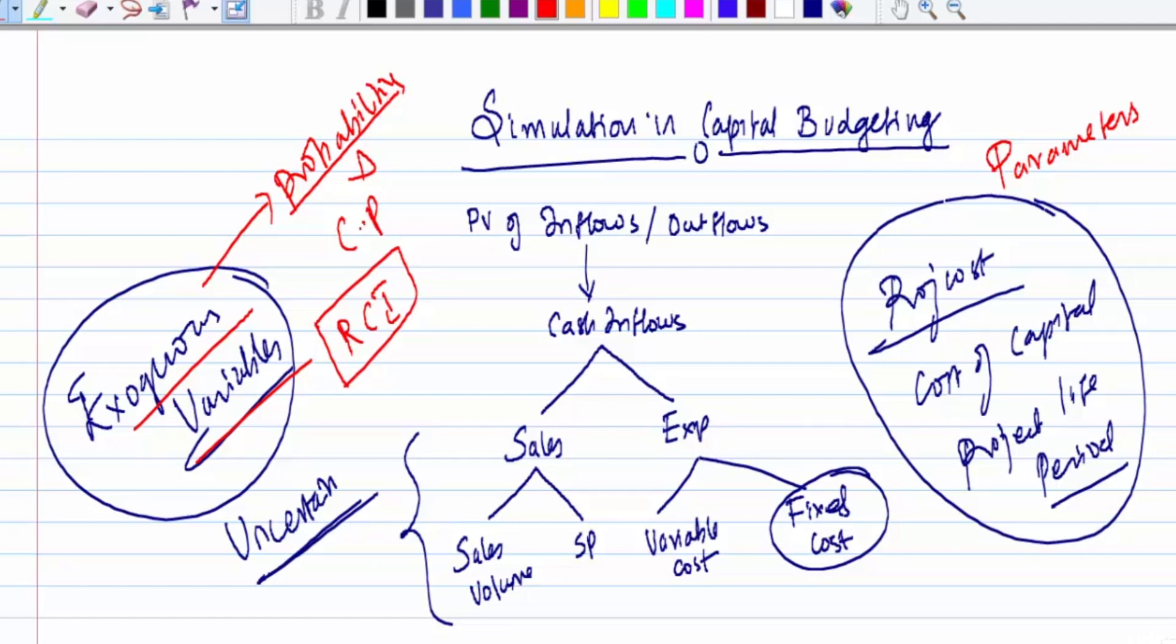We first identify the exogenous variables, establish probabilities by looking into the past, find cumulative probability, generate random class intervals, fit random numbers, and try to find the average or possible value of these variables like sales volume, selling price, or variable cost.